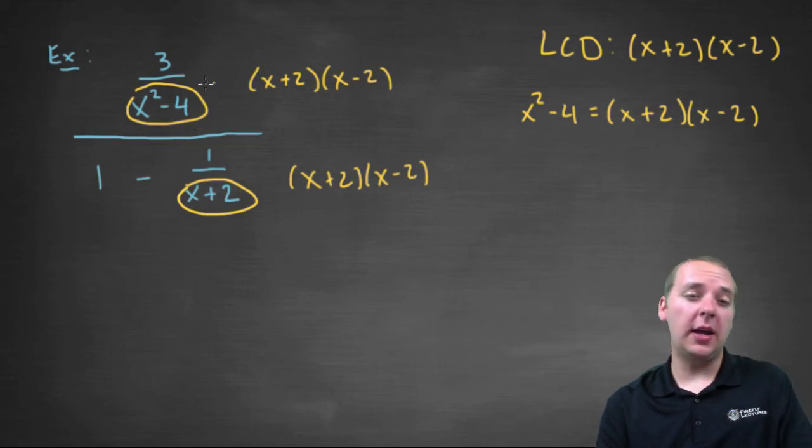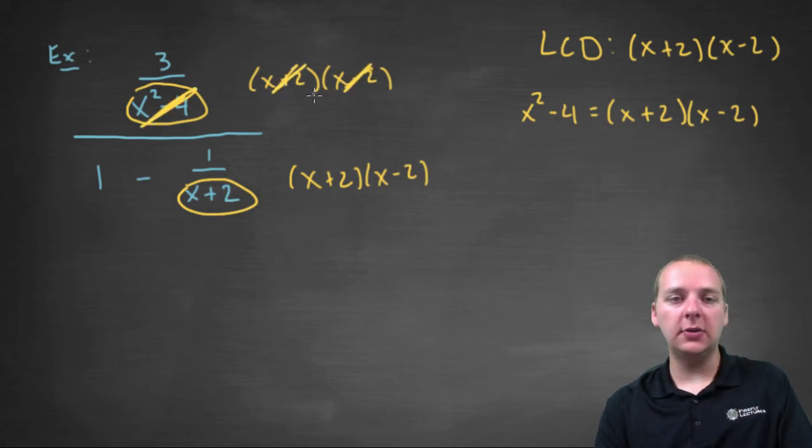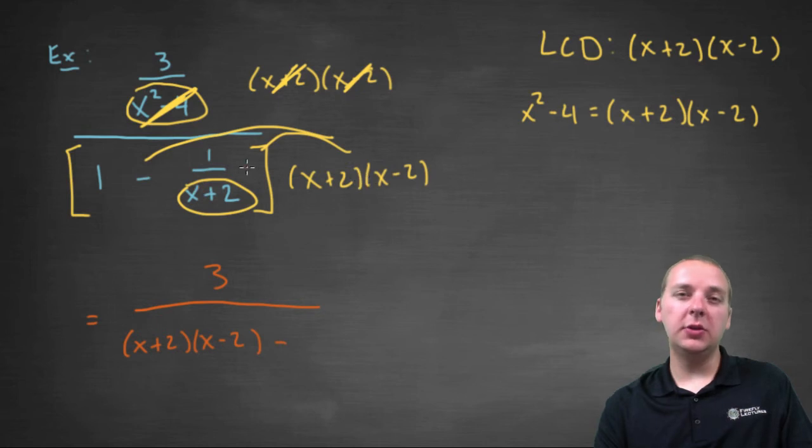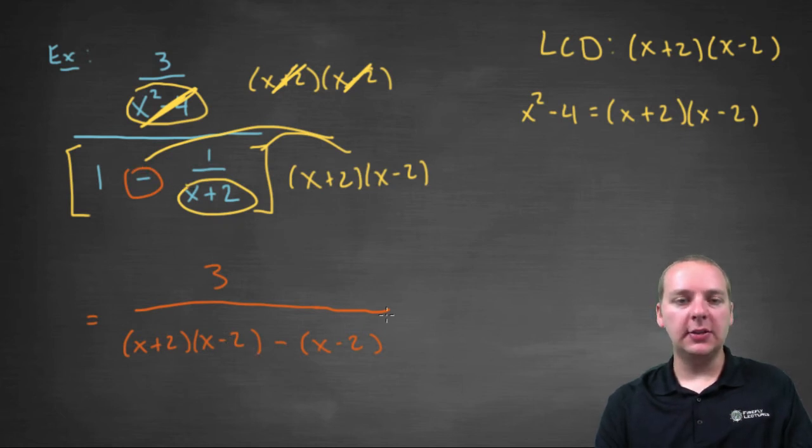And that should get rid of our mini-fractions that are all over the place. So we'll distribute this to the numerator, and actually there's just one term to multiply it by. It looks like this will cancel with both of these factors, because x plus two times x minus two is x squared minus four. And when we distribute it through the denominator, here and here, let's start jotting down what that would be. We would get a three in the numerator. And then we'd get x plus two times x minus two minus - and then when you distribute to the second term, the x plus two's will cancel, but not the x minus two. So we'll put x minus two. Make sure you put it in parenthesis, because we've got a minus right here that will need to be distributed.